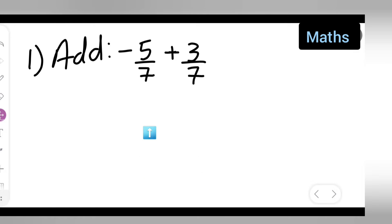First, take down the question that is add negative 5 upon 7 plus 3 upon 7. Let me solve this step by step. First, write down negative 5 upon 7 plus 3 upon 7.